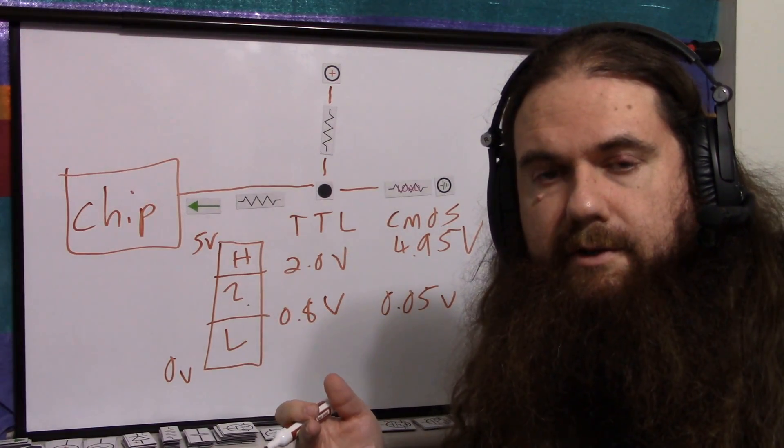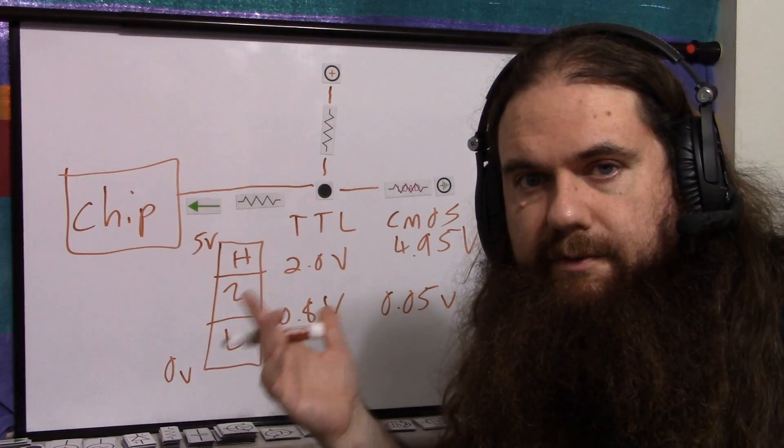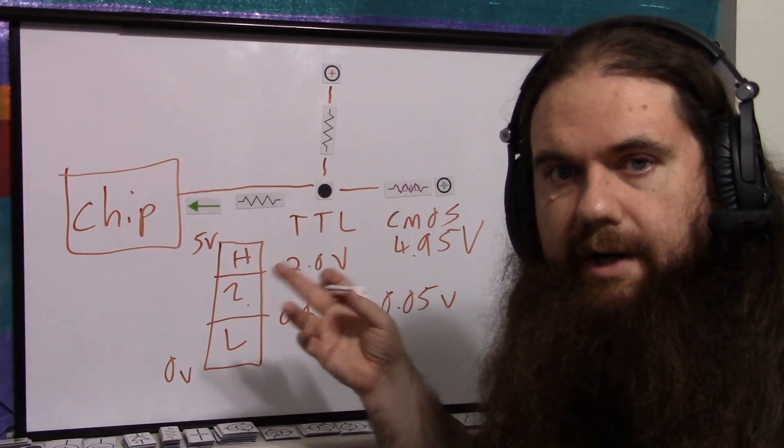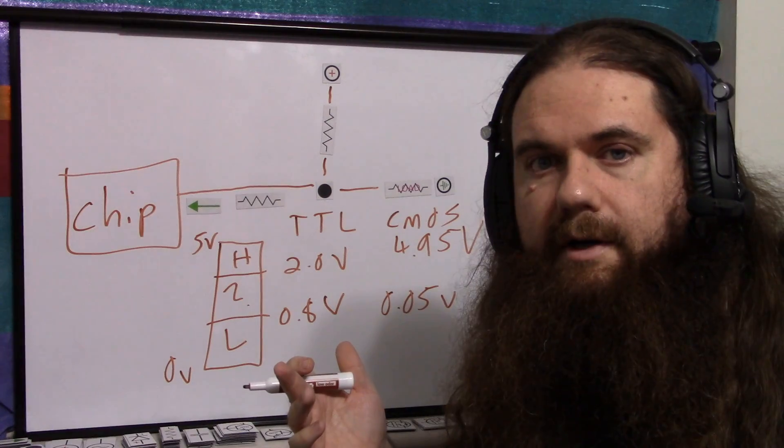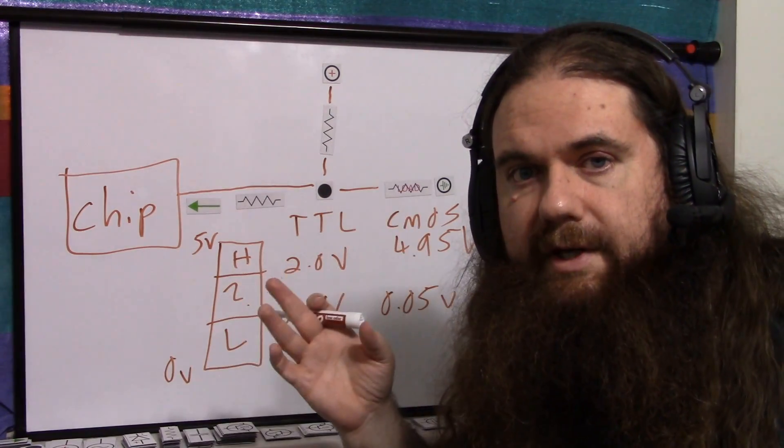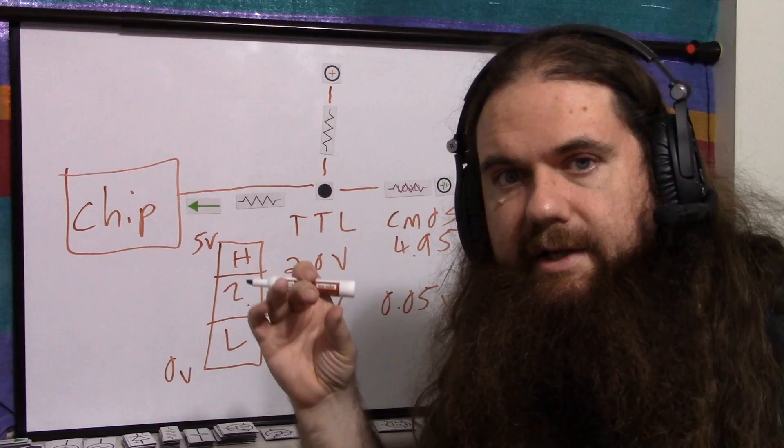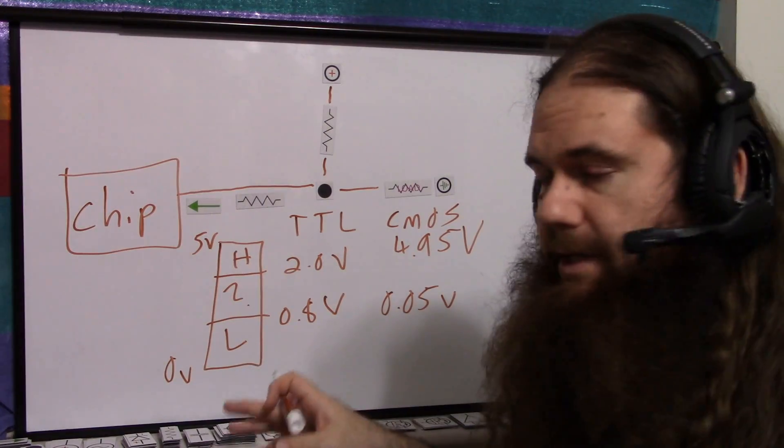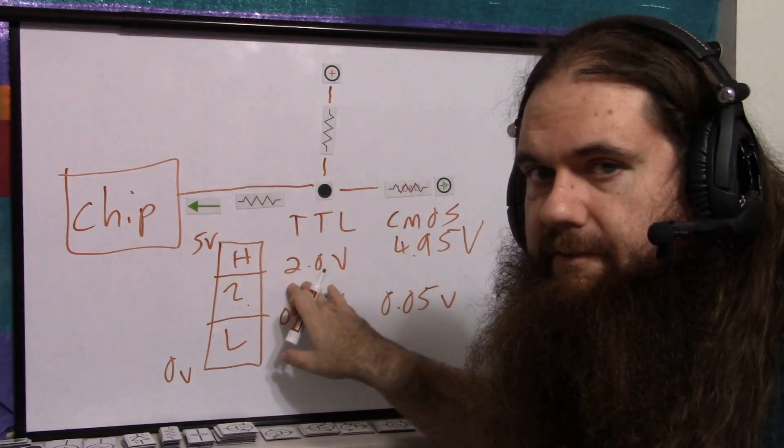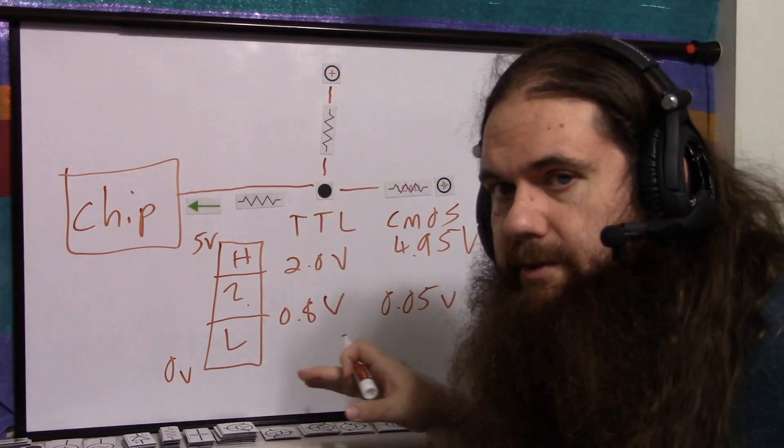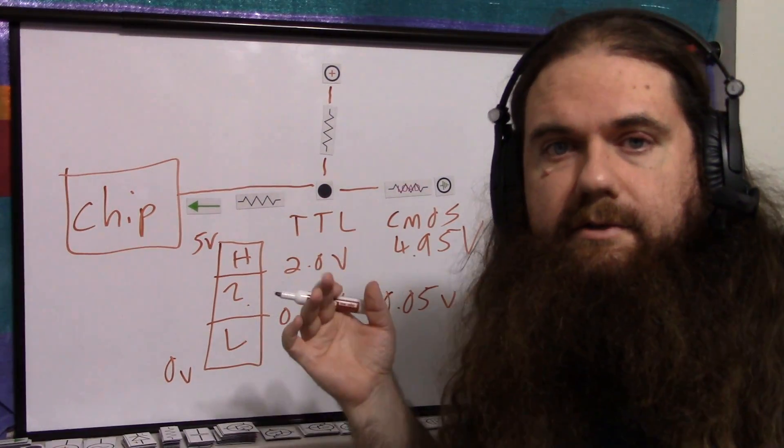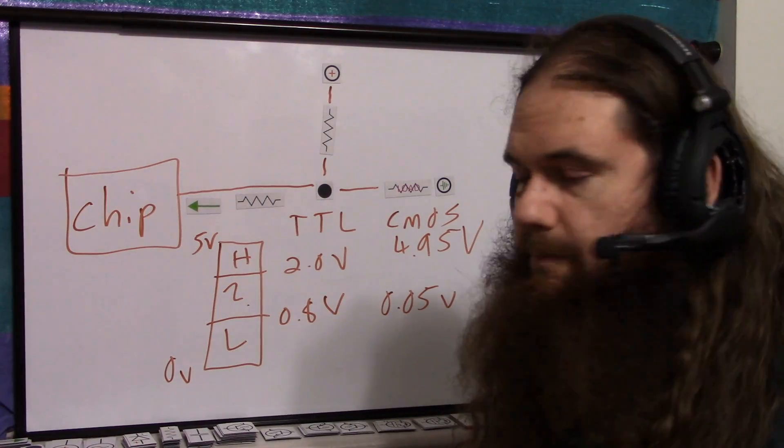But, as we've seen, you can plug a 3.3, 3.5 volt signal right into a microcontroller pin on an Arduino Uno, and it's going to read consistently high. It's not even in the dangerous range. So generally speaking, if you have a TTL chip designed for these levels, and you plug them into a CMOS chip designed for those levels, it's still going to work just fine. And that's why we usually don't bother.